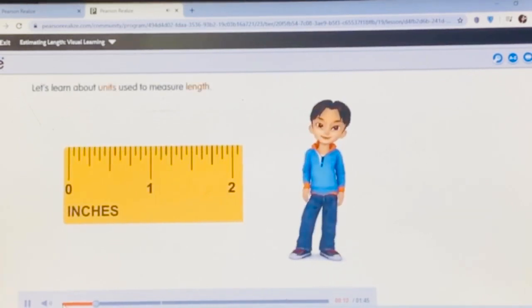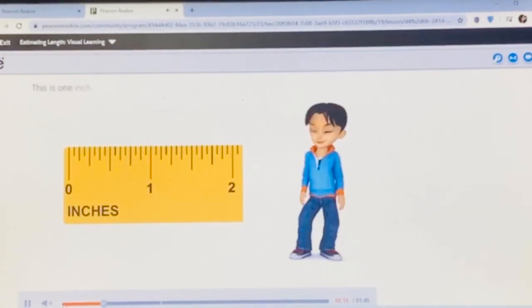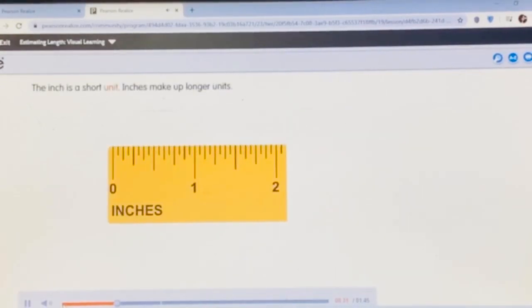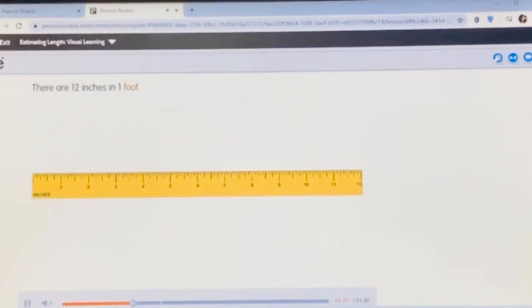Let's learn about units used to measure length. This is 1 inch. The inch is a short unit. Inches make up longer units. There are 12 inches in 1 foot. There are 3 feet in 1 yard.